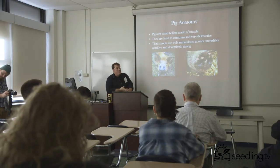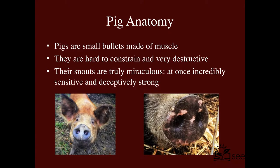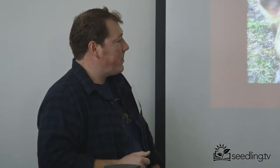Pig anatomy: they are little bullets made of muscle, which means nothing gets in their way when their heart is set on something. They are incredibly strong, and their shape makes them very difficult to restrain — very, very difficult. If you try to get a rope around their neck, they'll back out of it. Try to get it around a leg, they'll manage to slip. They are really amazing little creatures.